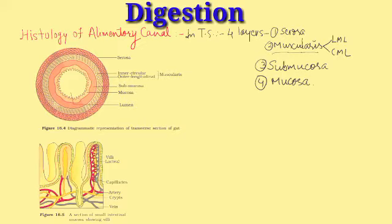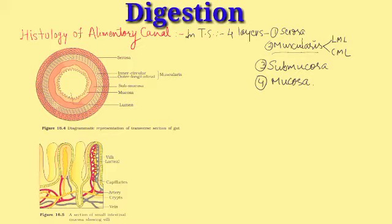In the transverse section of the alimentary canal, there are four layers. The outermost is the serosa, second is the muscularis, third is the submucosa, and fourth is the mucosa. The serosa is the outermost layer made up of fibrous connective tissue plus simple squamous epithelium. The muscularis layer is divided into two layers: the outer longitudinal muscle layer and the inner circular muscle layer.